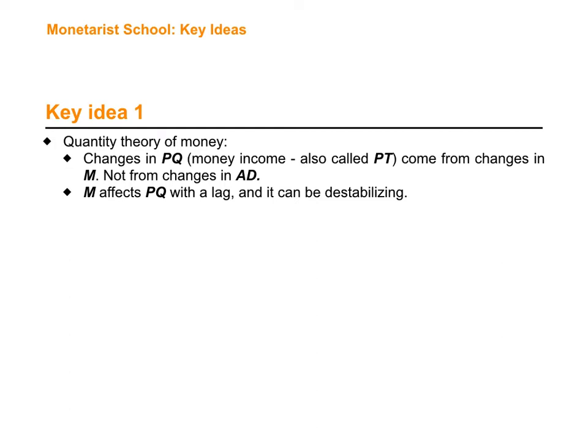Also, M is going to affect PQ with a lag. That means that if we increase the money supply in the economy, that is not going to be reflected automatically in money income. It's going to take some time for the money to go through the economy through different channels. Some parts of the economy are going to be more affected than others, and it's going to take several weeks or months to have that effect.